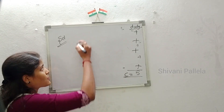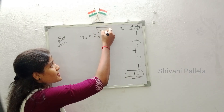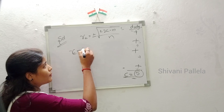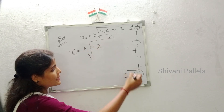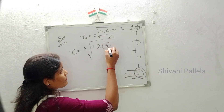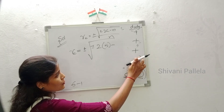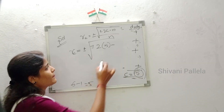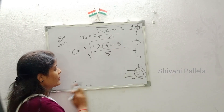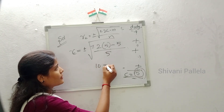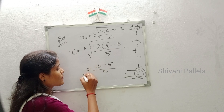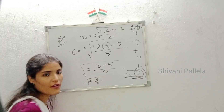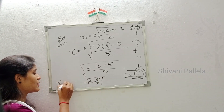Now substitute into the formula: rc = ±√(±(2C − n) / n). Here C = 5, so 2×5 = 10. n = number of observations − 1 = 6 − 1 = 5. So: rc = ±√(±(10 − 5) / 5) = ±√(5/5) = ±√1 = 1. The result is rc = 1.